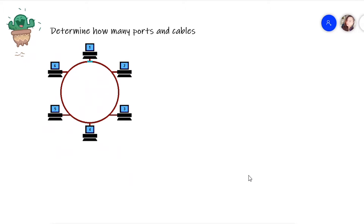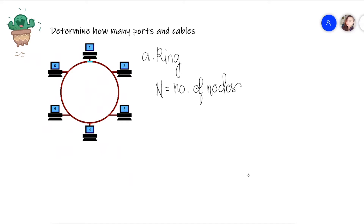Problem number one: we need to determine how many ports and cables we have for this network. This is a ring topology. We'll assign the letter n for the number of nodes. We have six computers here, so we have six nodes — n equals six.